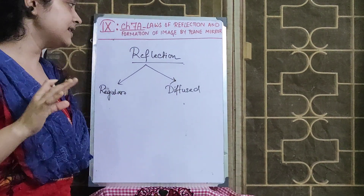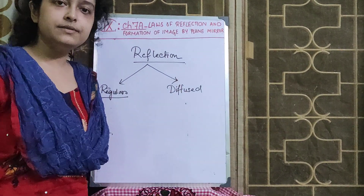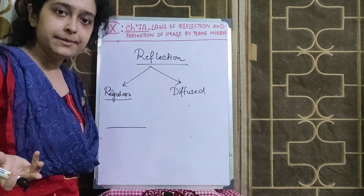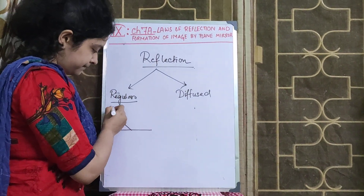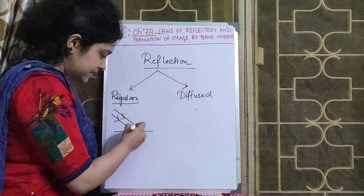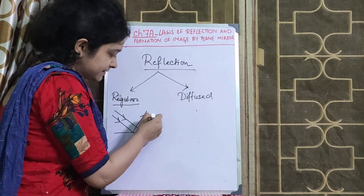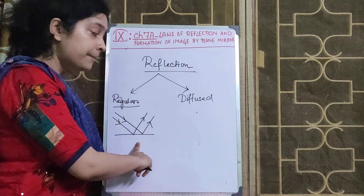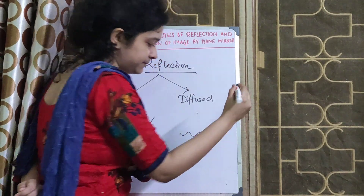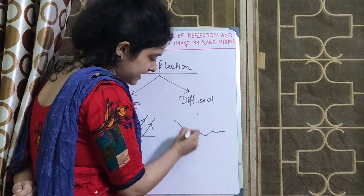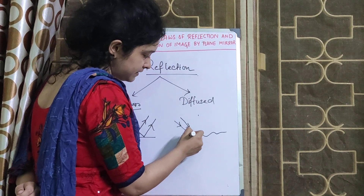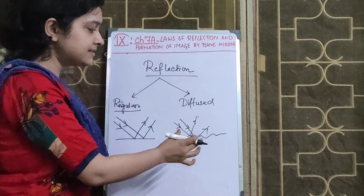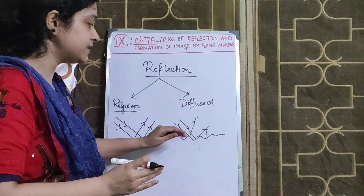You have learned this in Class 7 also. What is regular reflection? Suppose you have a smooth surface — for example, a plane mirror — light rays fall and they are reflected back as a parallel beam of light rays. In diffused reflection, the light rays get scattered; they are not reflected back as a parallel beam because the surface is uneven.